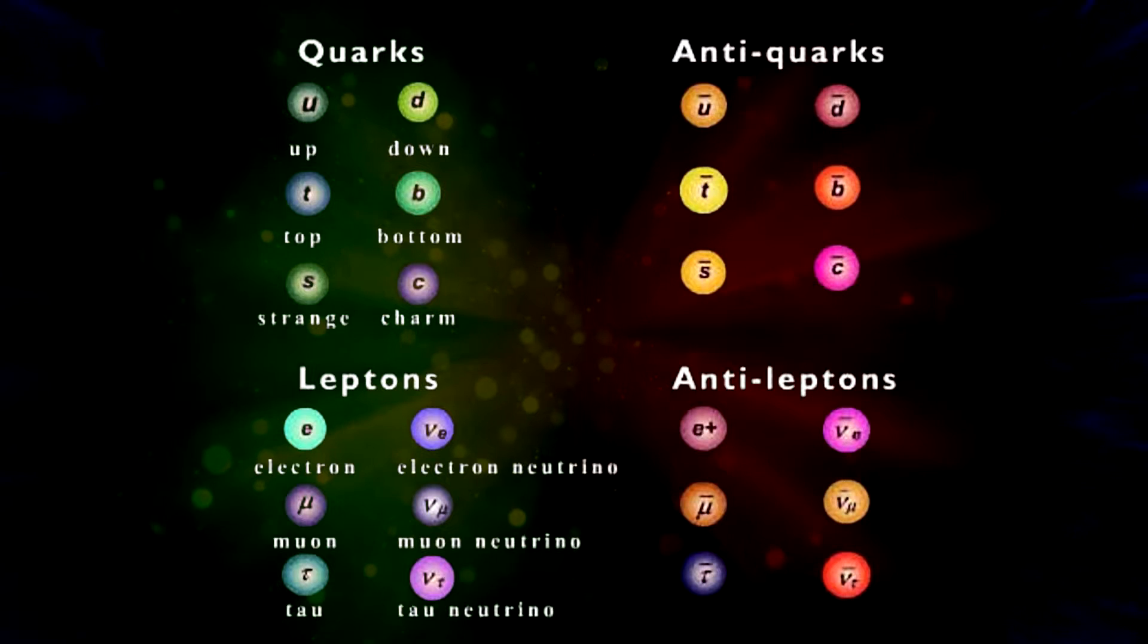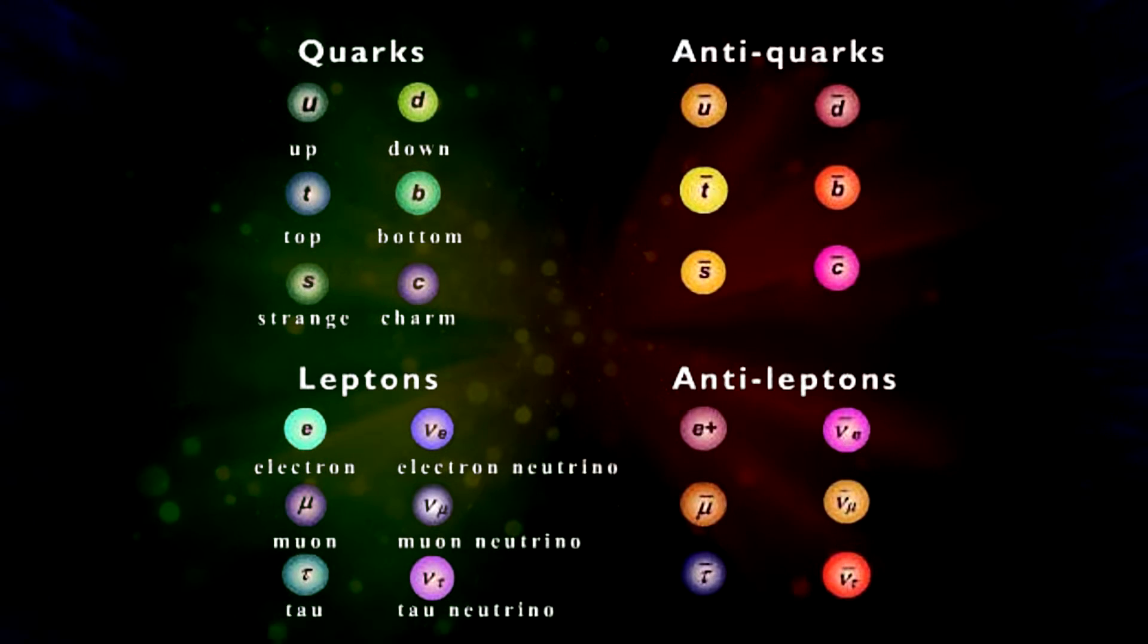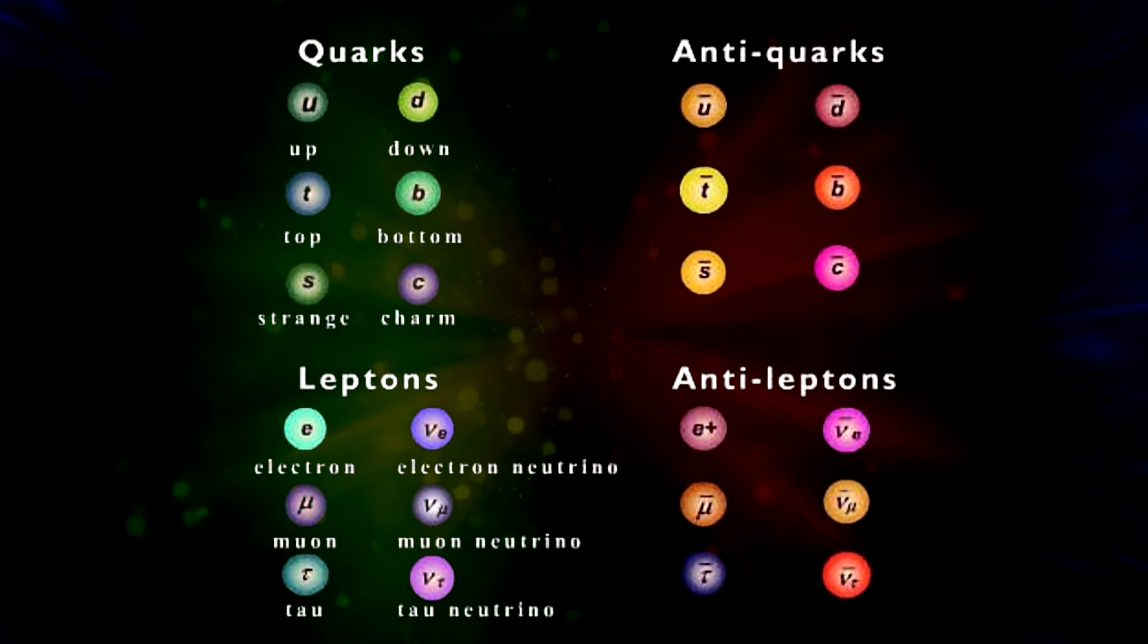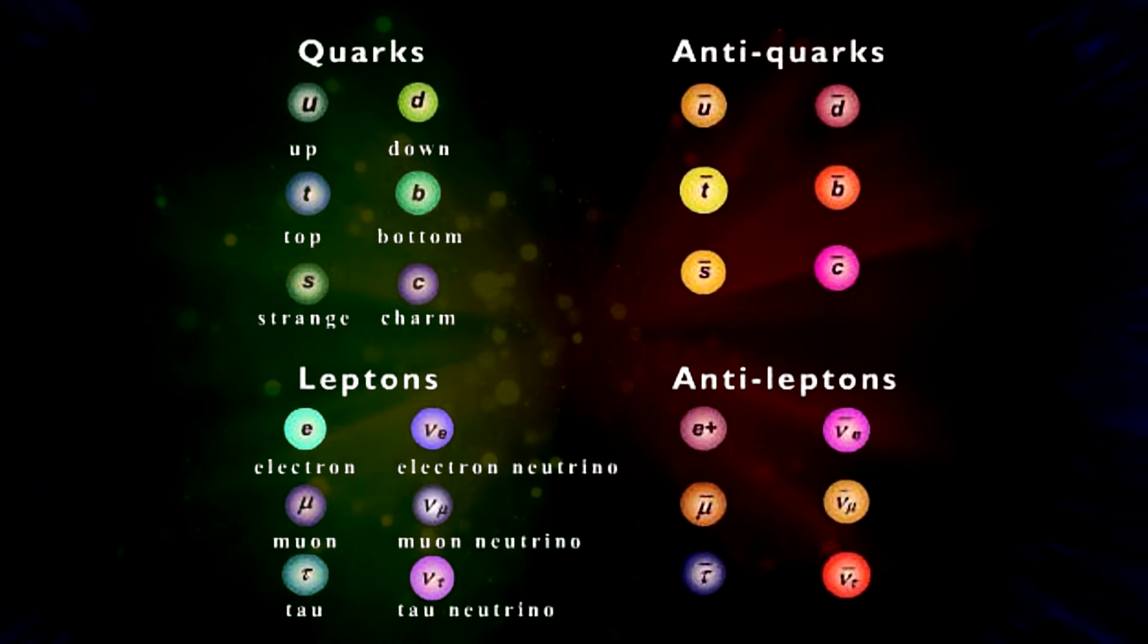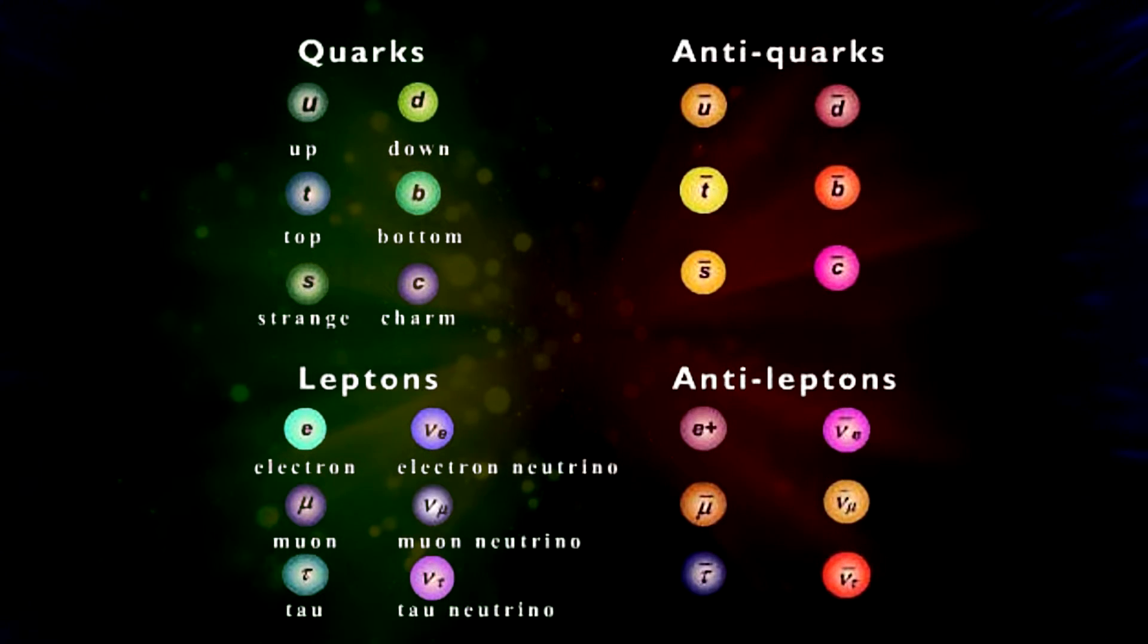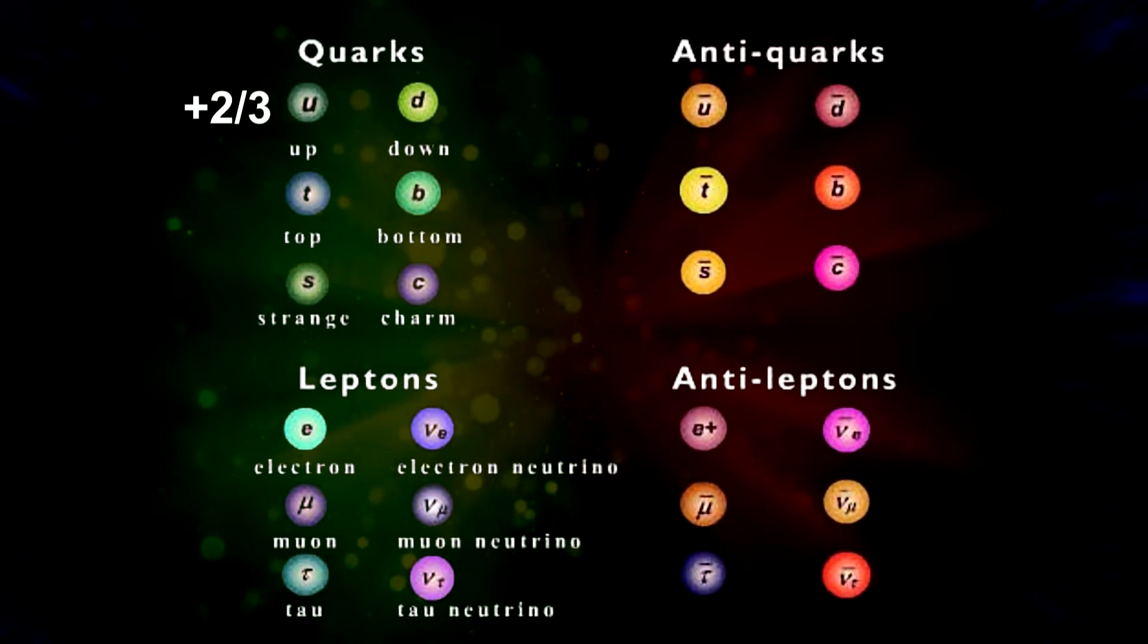Along with each of these different particles, they all have their own respective antiparticles. For example, the up quark has an antiparticle of an anti-up quark. The antiparticle of each respective particle has its opposite charge. For example, since an up quark has a charge of plus two-thirds, its antiquark has a charge of minus two-thirds.